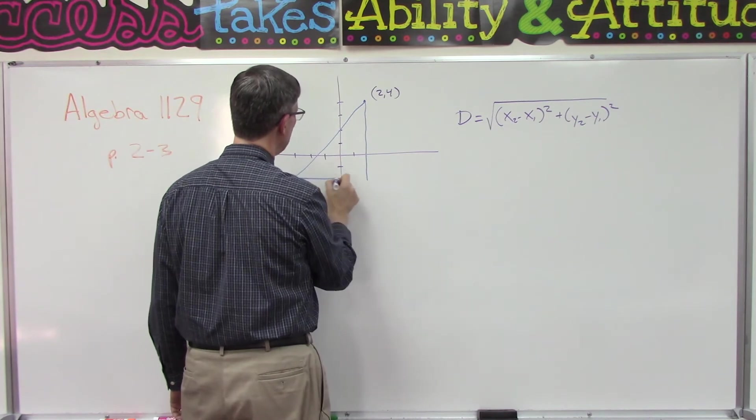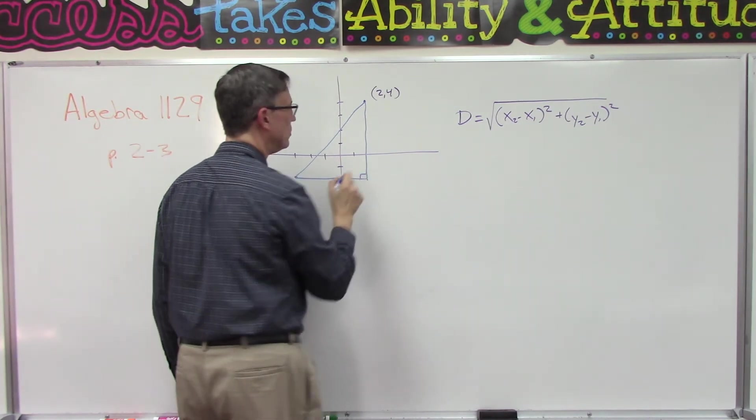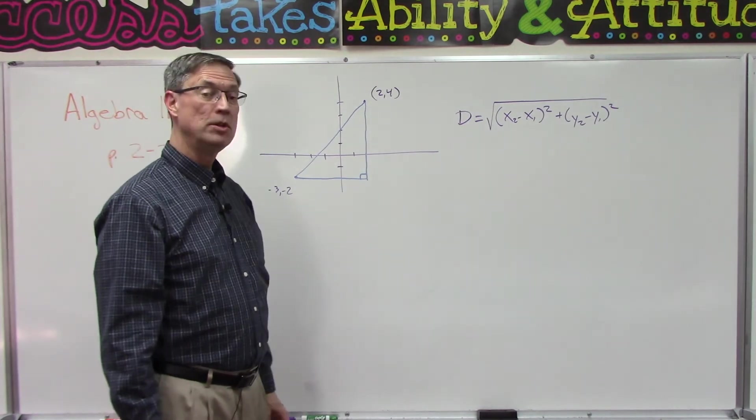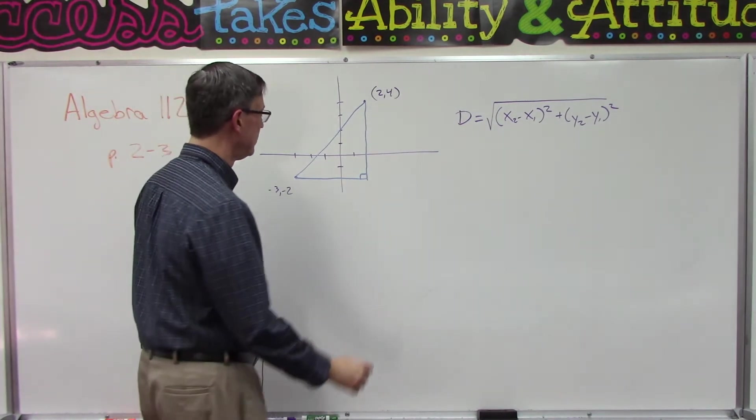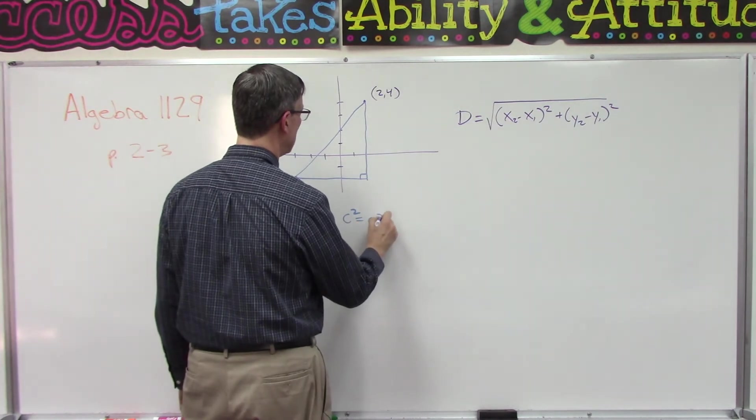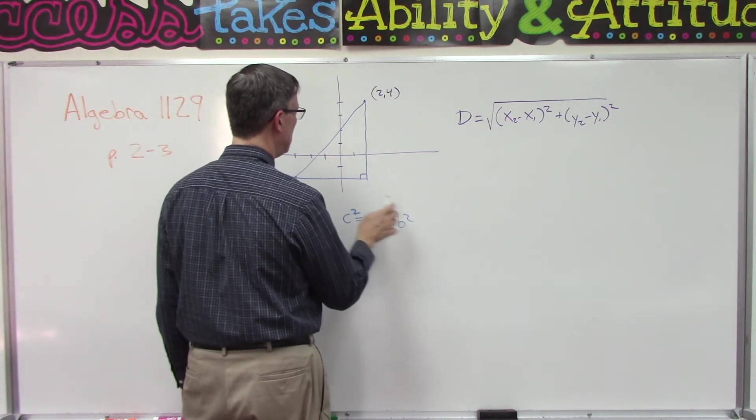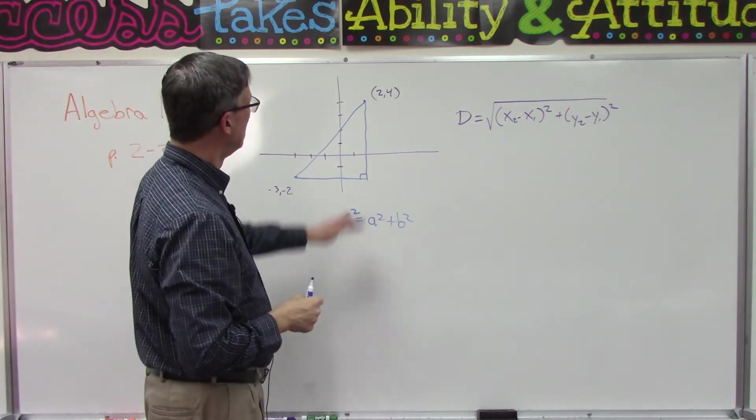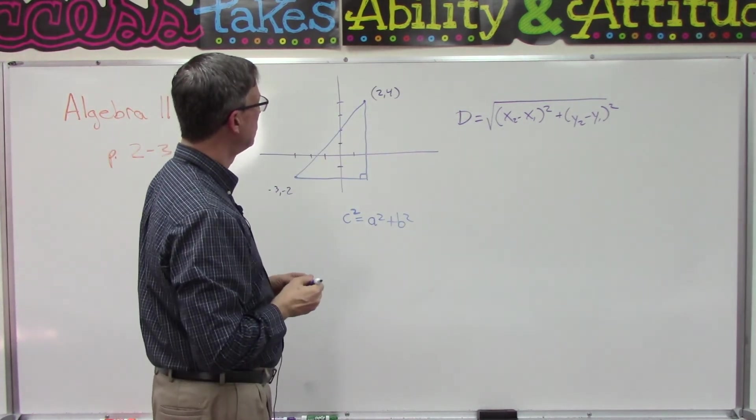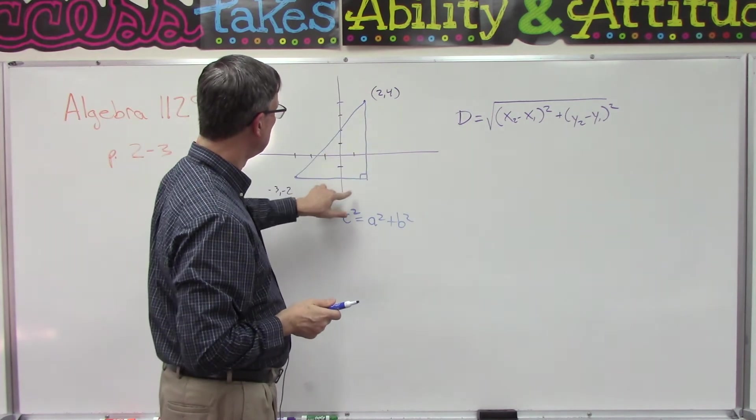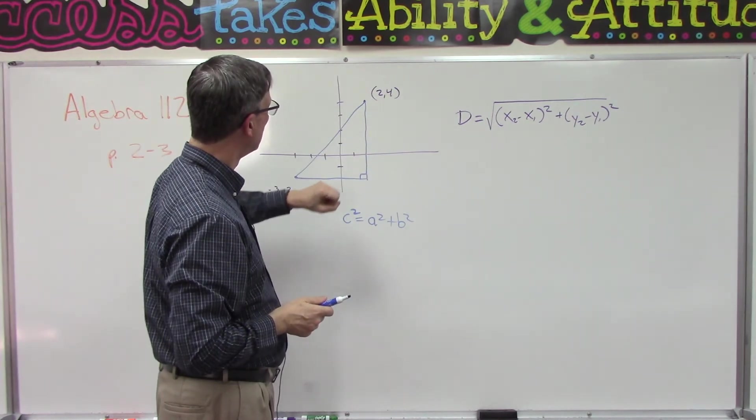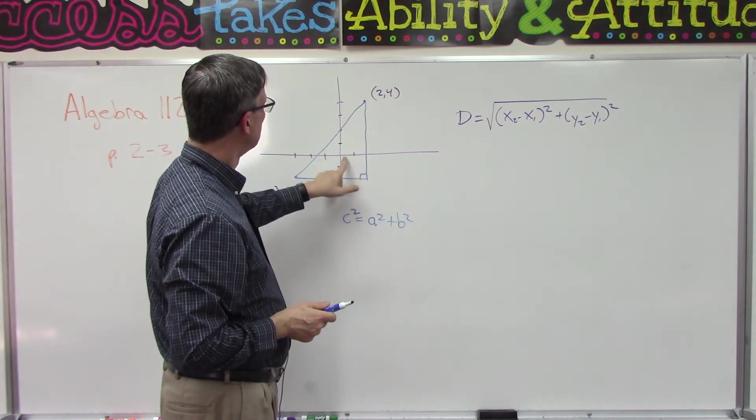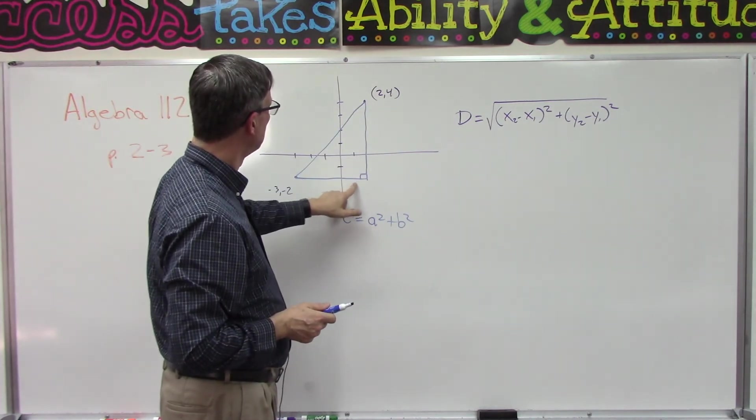And then come straight over like this so that I have a right triangle, now I can use Pythagorean's Theorem which says that c squared equals a squared plus b squared. So this would be like the c, the hypotenuse, so the hypotenuse squared is equal to this side plus this side. Let's see if we can figure out what these lengths are. I'm saying that this one is 2, 4, so this length from here to here is 2, and then from here to here is negative 3.